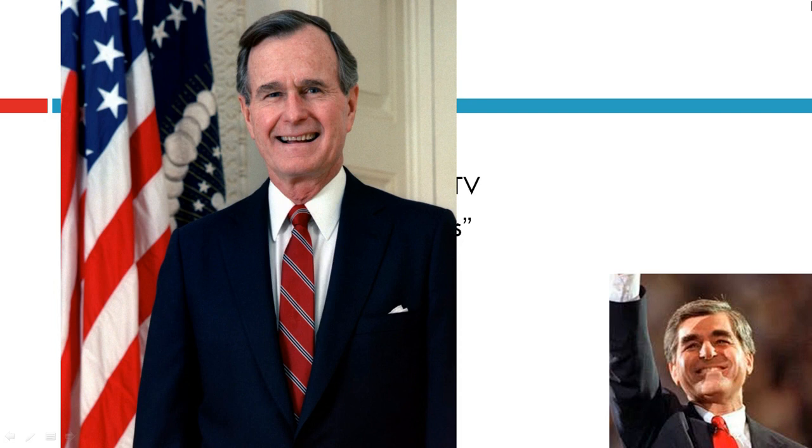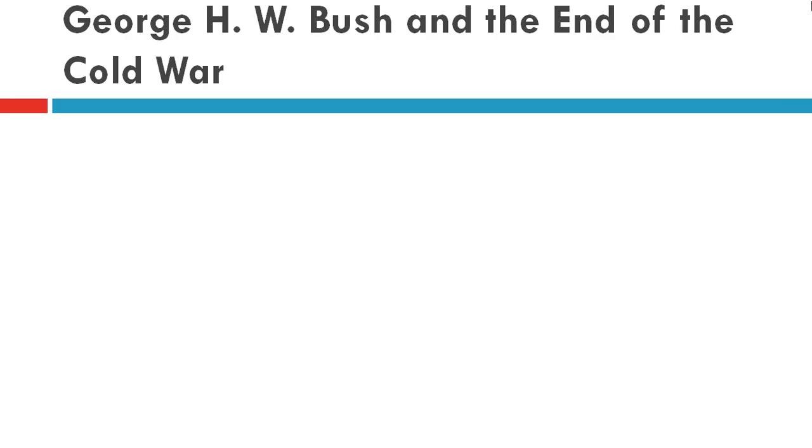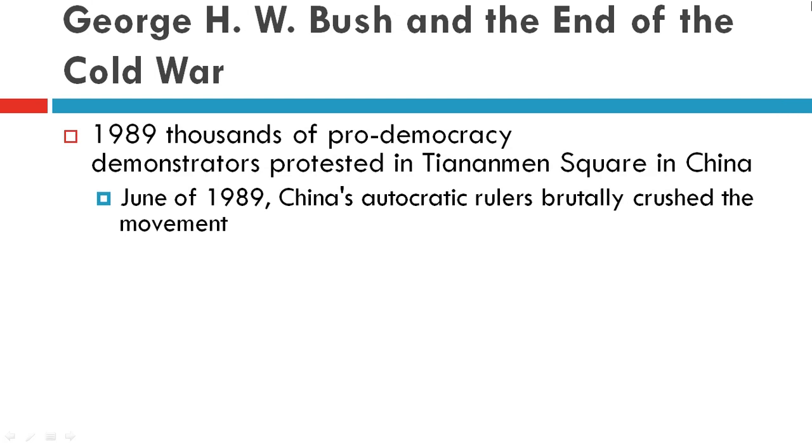Despite the troubles Reagan had with questions about his administration, the Republicans won again in 1988, winning roughly 79% of the electoral vote.